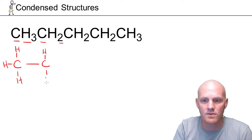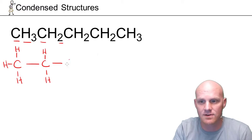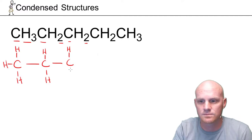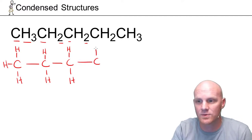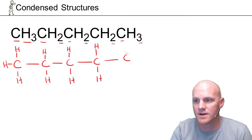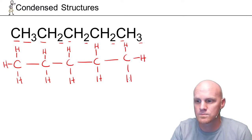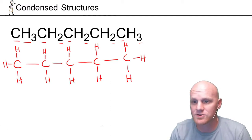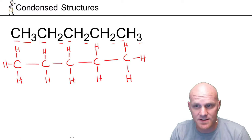So we'll draw those in. That carbon's bonded to the next carbon, which is also bonded to two hydrogens, and it's bonded to the next carbon, which is bonded to two more hydrogens. Then we go down to the next carbon in the chain, which is bonded to three hydrogens. And there's our Lewis structure corresponding to this condensed structure. I started with a simplistic example here, but we're going to ramp this up pretty quickly.